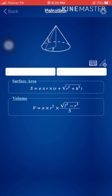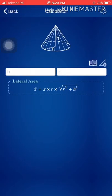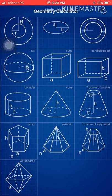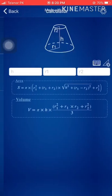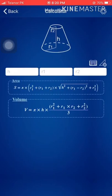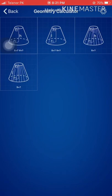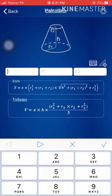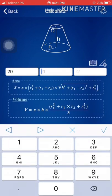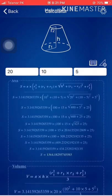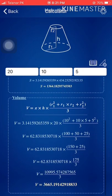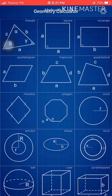If you want only the lateral area, or the surface area and volume, you can choose any option from these. There's also a frustum of the cone available. You can put in the top and bottom radius along with the height. Let's say the height is 20 units, the bottom radius is 10 units, and the top radius is five units. The area and volume of the frustum cone are calculated — this is pretty amazing.